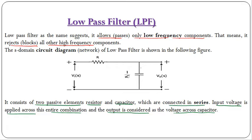If we take the output across the capacitor it will be a low pass filter, but if we take the output across the resistor then it will be a high pass filter. This is the difference between low pass filter and high pass filter in circuit configuration. Now let us see the transfer function of the low pass filter.